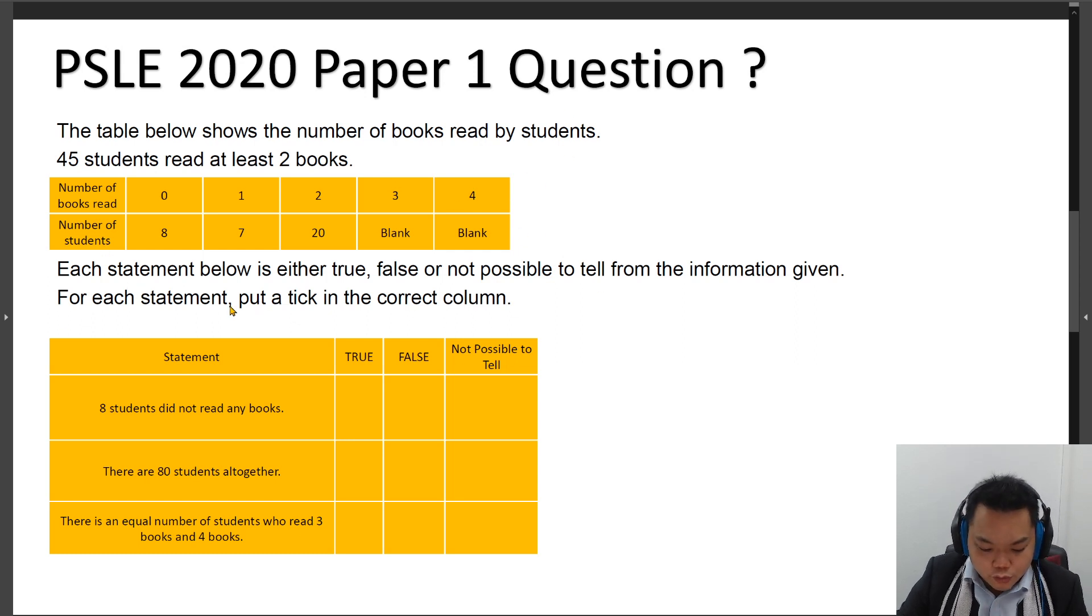So each statement is either true, false, or not possible to tell from the information given. For each statement, put a tick in the correct column.